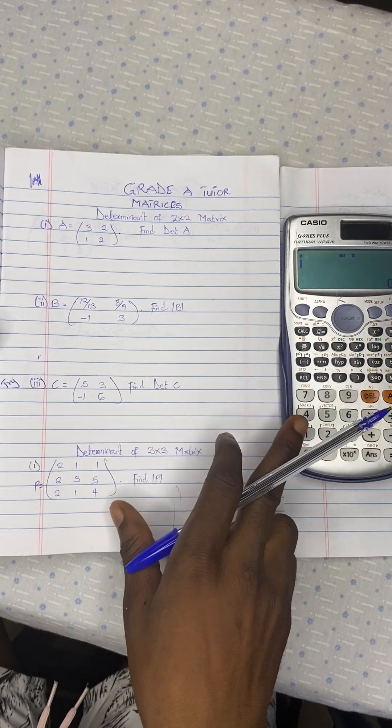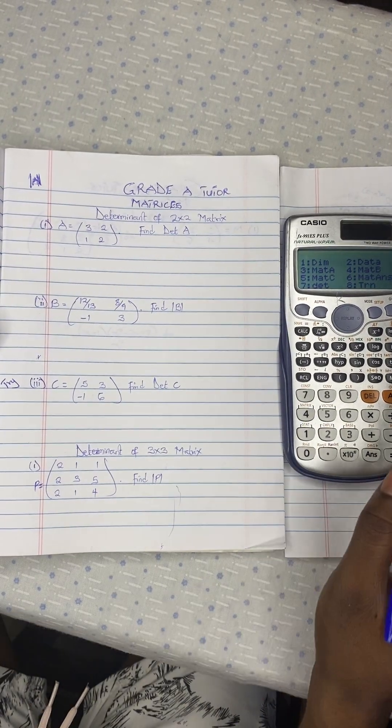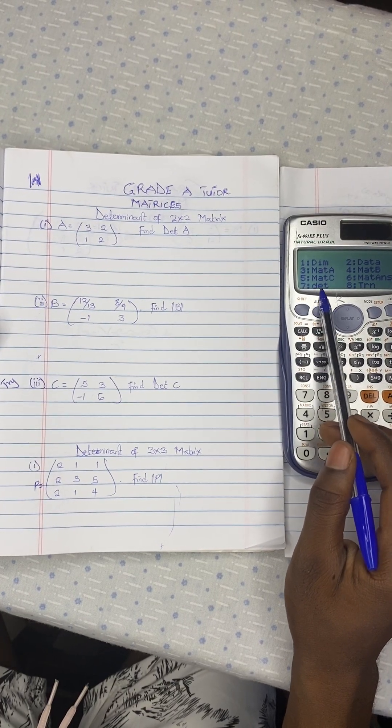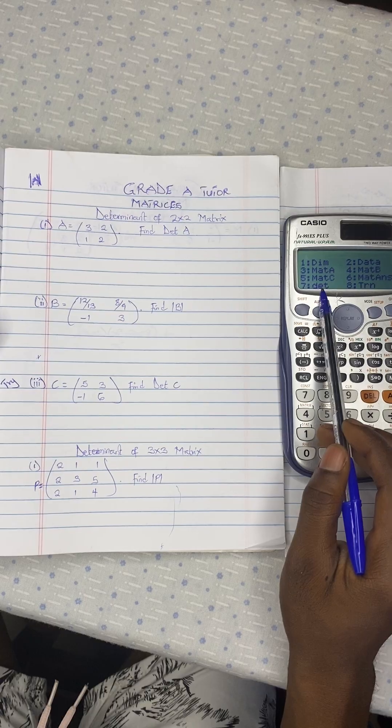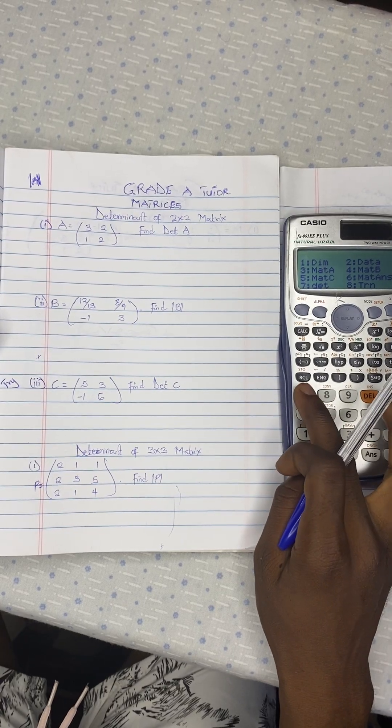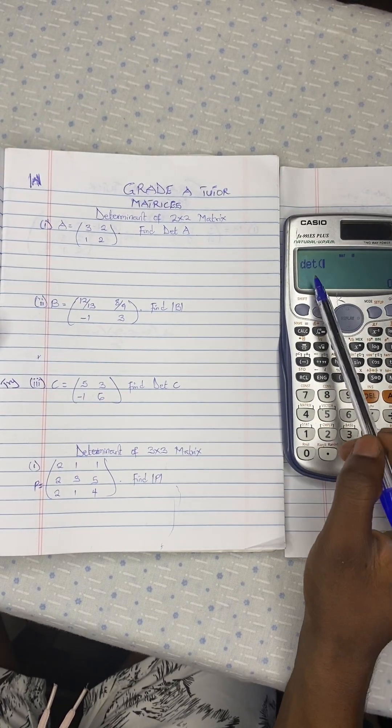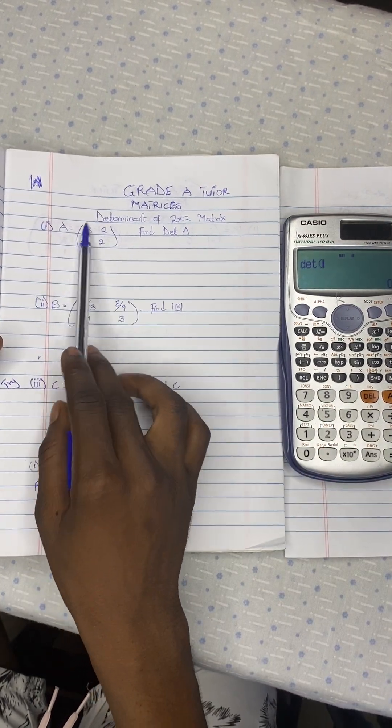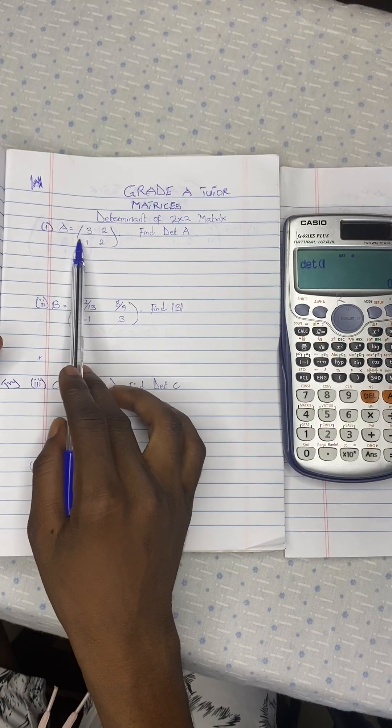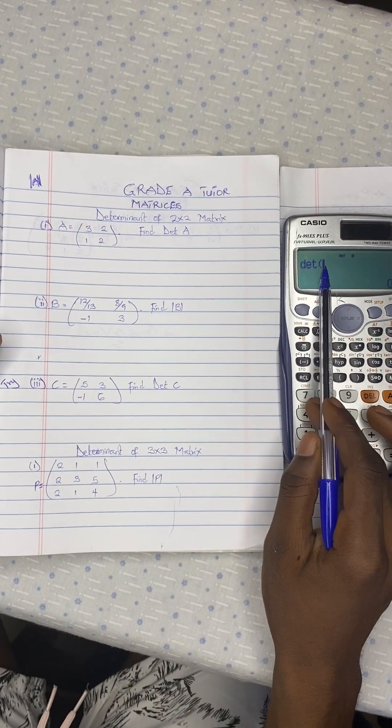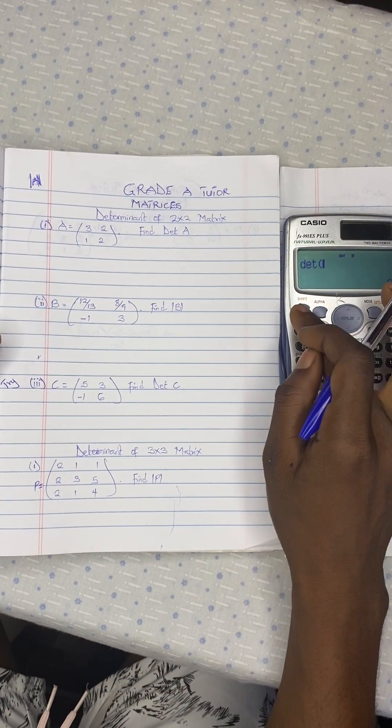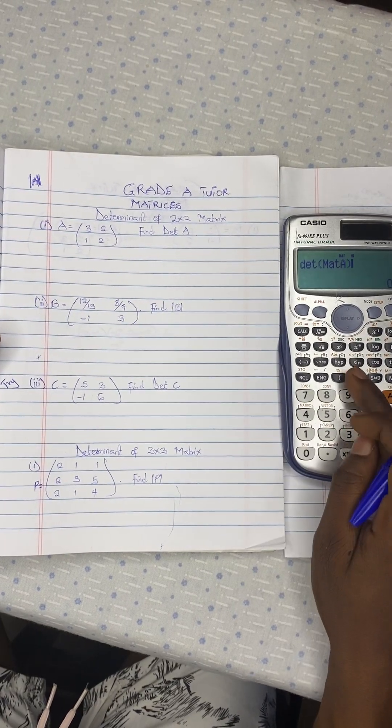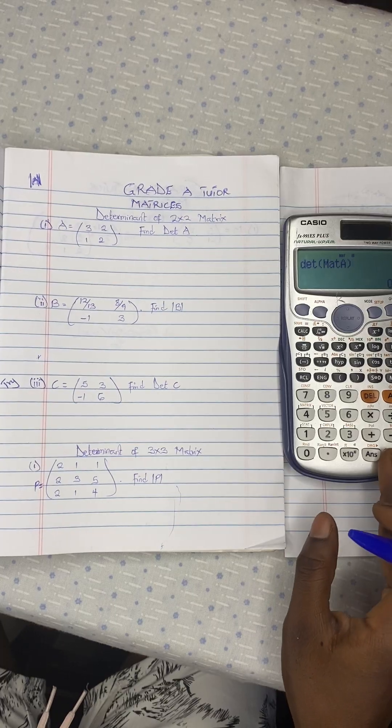You press shift and 4. Right, so if you look at the 7th option, you see det. Right, so that is the determinant. So if you press on 7 like this, they would ask you determinant of what. So you see, this one is in matrix A. So you have to bring the matrix A here. So shift 4. Then you see A, matrix A here. And so as simple as that. And you are done.